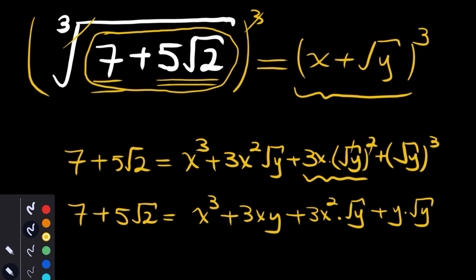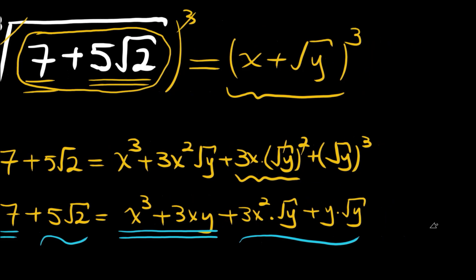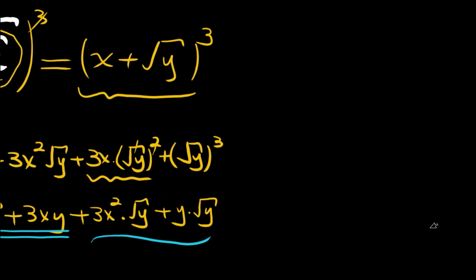The rational part here is 7, and the rational part on the right is x cube plus 3 times xy. The radical part here is 5 times root 2. Let's write this system: 7 equals x cube plus 3 times xy.